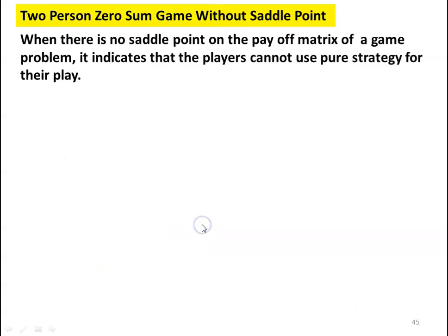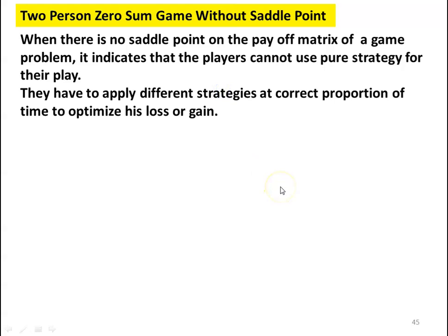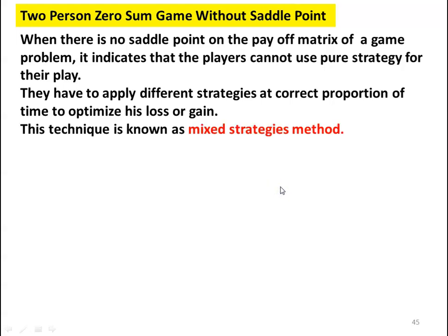In the 2×n zero-sum game without saddle point, when there is no saddle point in the payoff matrix, it indicates that the player cannot use pure strategy. When we have a saddle point, the strategies of players A and B corresponding to the saddle point are pure strategies — they use only one strategy throughout the game. But when there is no saddle point, they must use multiple strategies in a mixed proportion, applying different strategies at the correct proportion of time to optimize their loss or gain.